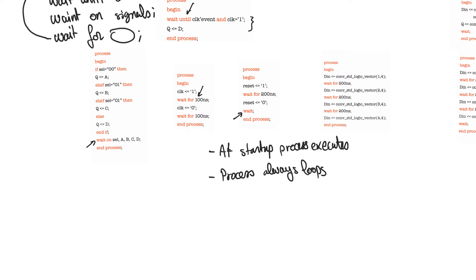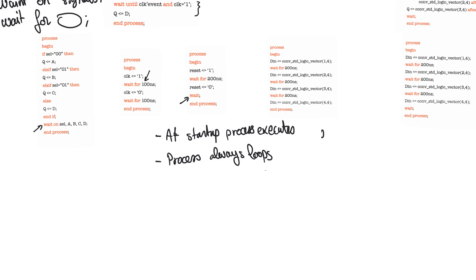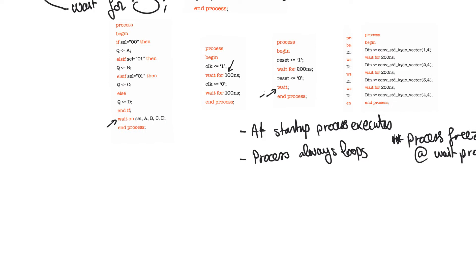The third point — not really a rule but something you can guess — is that the process will freeze at a wait statement. How long? It depends on the kind. If it's wait for, it will wait for a certain amount of time. If it's wait until, it will wait until the condition is satisfied. If it's wait on, it will wait until there's an event on any of the listed signals. And if it's an unconditional wait, it will wait forever.